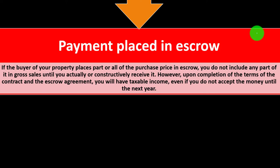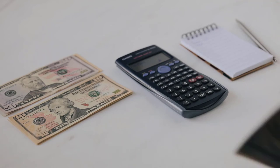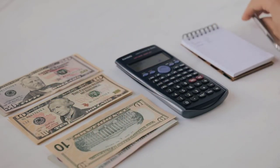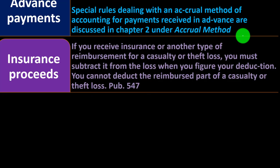Payment placed in escrow: if the buyer of your property places part or all of the purchase price in escrow — held until the completion of the process — you do not include any part of it in gross sales until you actually or constructively receive it. However, upon completion of the contract terms and the escrow agreement, you will have taxable income even if you do not accept the money until the next year. The IRS is concerned about taxpayers delaying constructive receipt past a cutoff date to defer income.